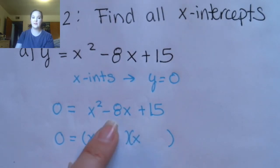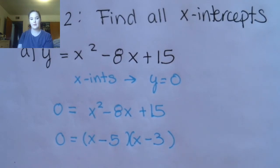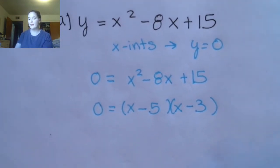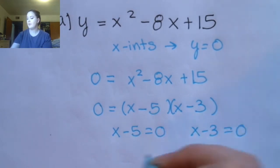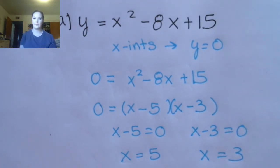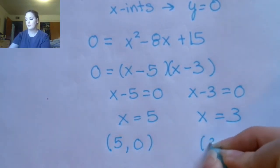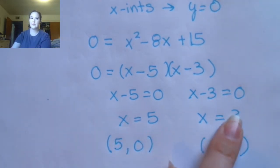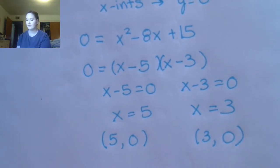I'm going to find what multiplies to 15 and adds to negative 8 — that should be negative 5 and negative 3. I'm going to set each of my factors equal to 0 and get my two solutions: x equals 5 and x equals 3. Now I'm not going to forget the original question, which was to find the x-intercepts, so I'm going to list my answer as an ordered pair. These are my x values and my y value was 0.